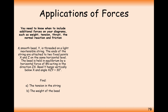In this question here that we'll start on, a smooth bead Y is threaded on a light inextensible string. The ends of the string are attached to two fixed points at X and Z on the same horizontal level. The bead is held in equilibrium by a horizontal force of 8 newtons acting in the ZX direction, with Y vertically below X at an angle of 30 degrees. Part A is to find the tension in the string, and part B is to find the weight of the bead.